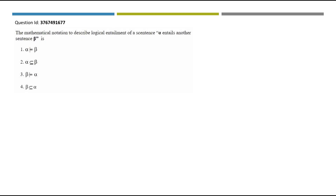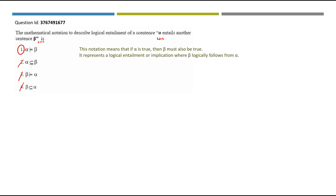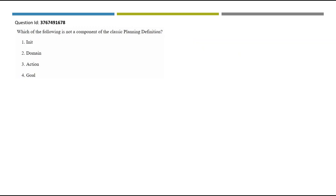The mathematical notation for logical entailment: alpha should appear on the left-hand side and beta on the right-hand side, so options 3 and 4 are ruled out. The symbol 'alpha is a subset of beta' is not the notation for entailment, so option 2 is also ruled out. Option one is the right answer — it means if alpha is true then beta must also be true, representing logical entailment where beta logically follows from alpha.